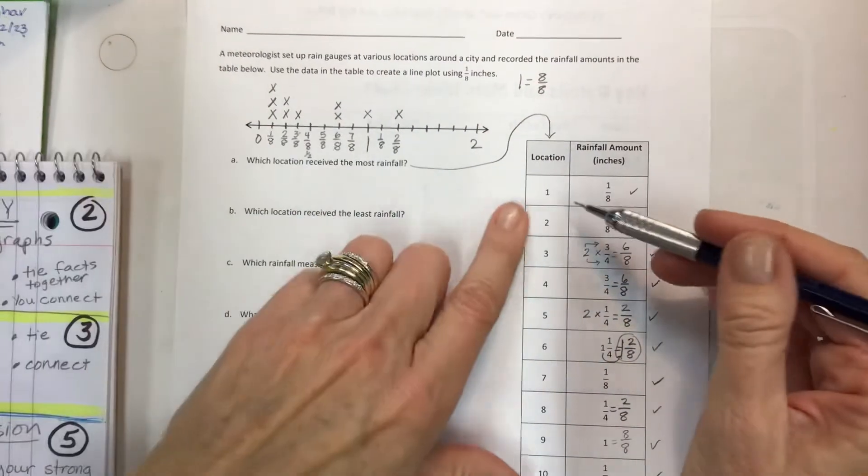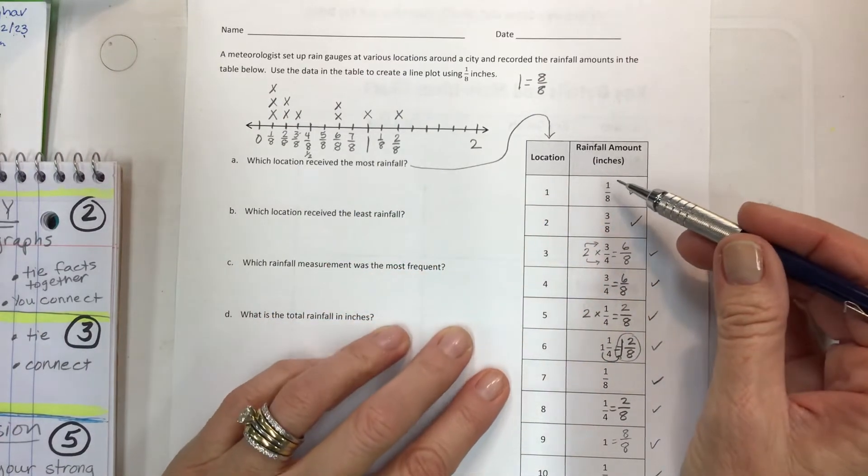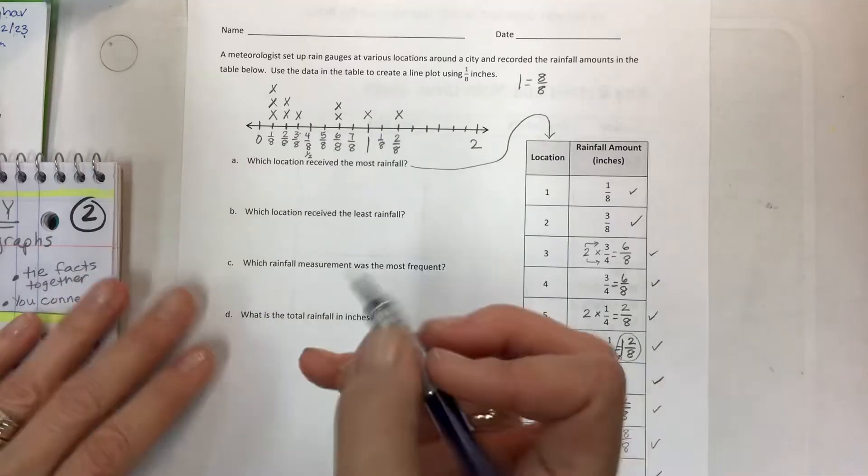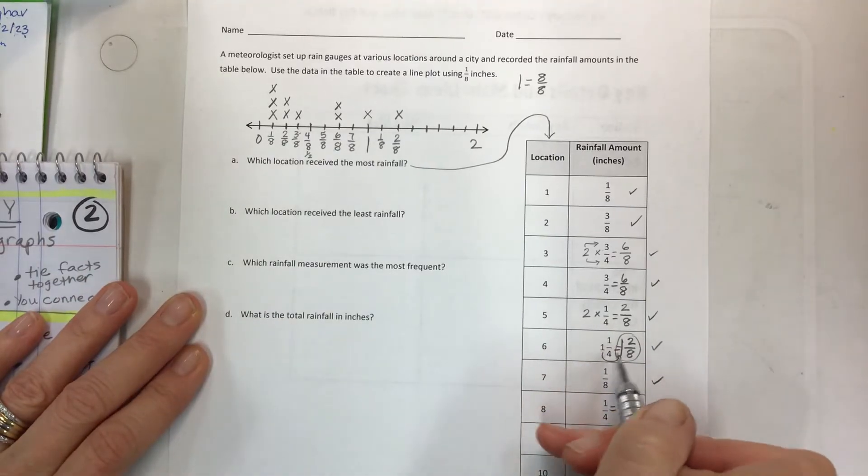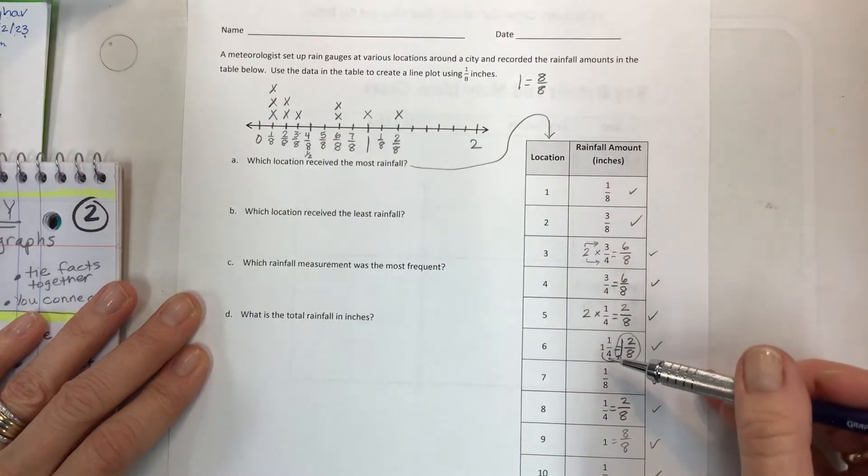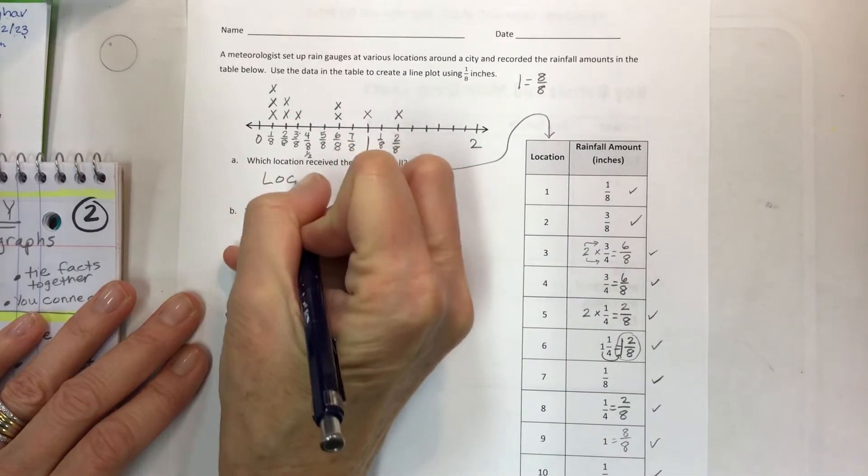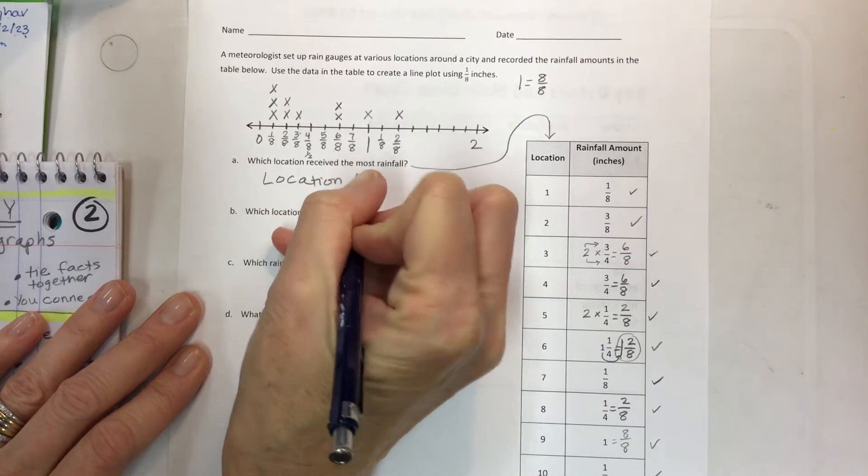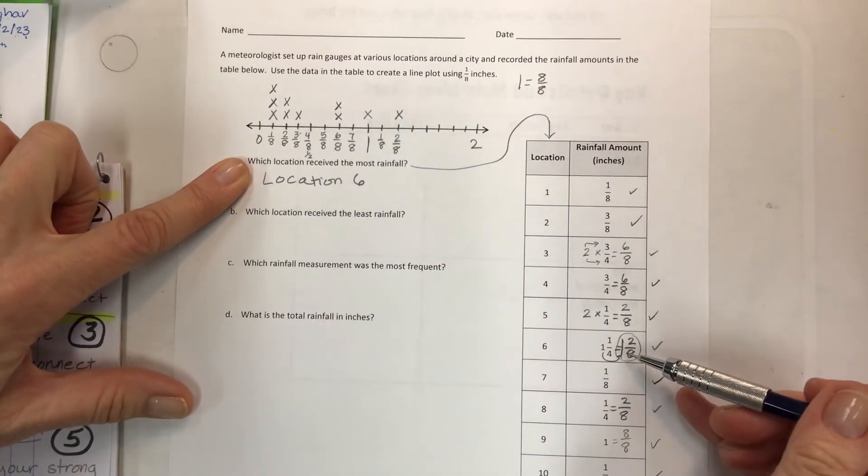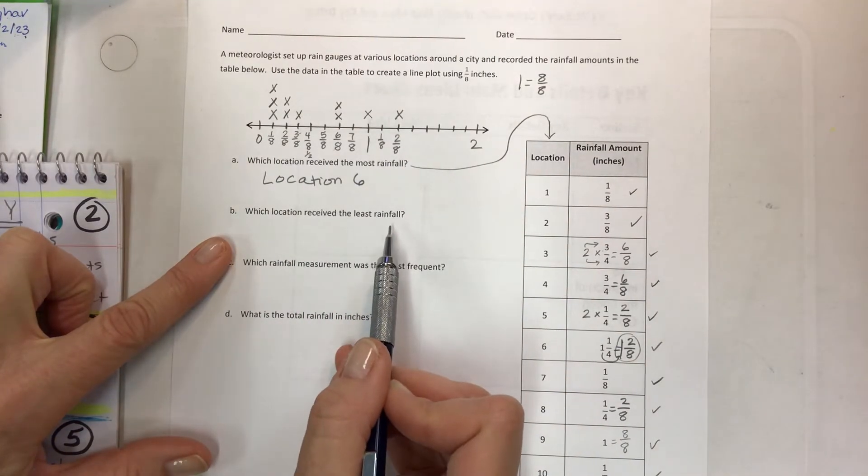And so then you have to go to the location and say, which is the greatest number? Now that one stands out pretty easily because one and one-fourth has a whole number and none of the other ones do. And none of the other fractions are improper. So this one, location six is the most rainfall. Then which location received the least?